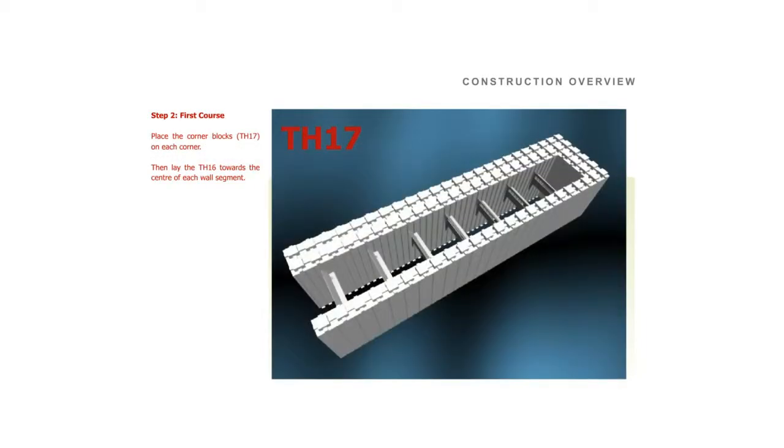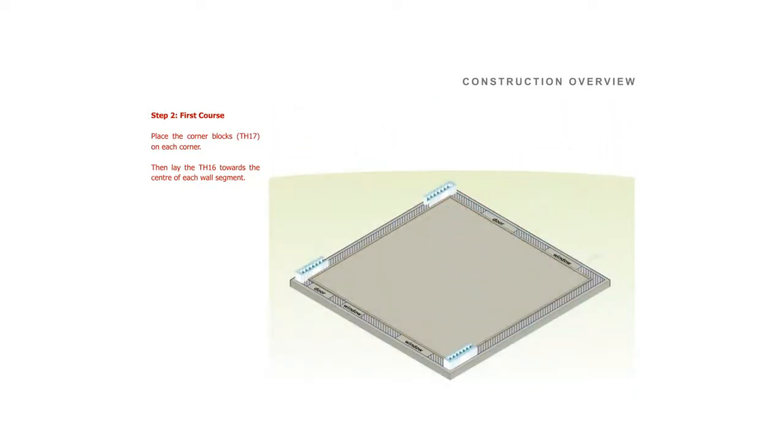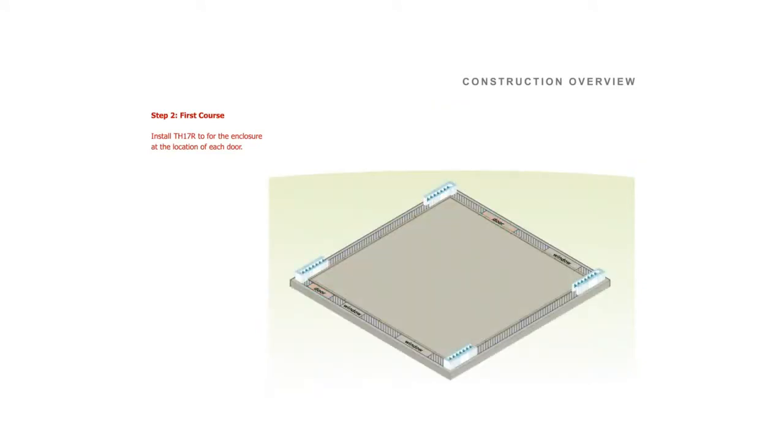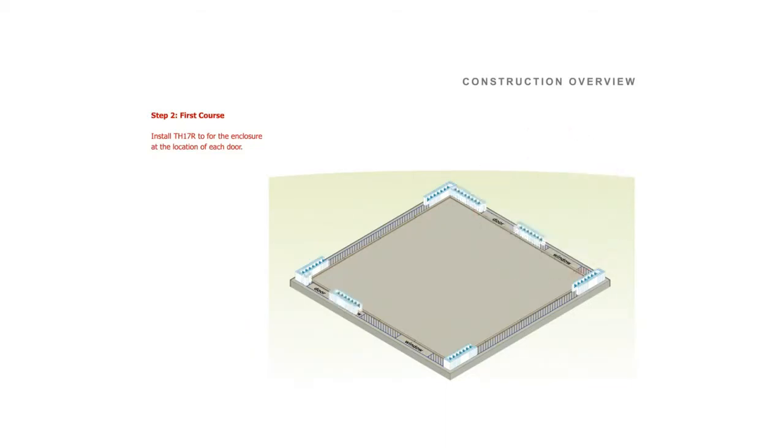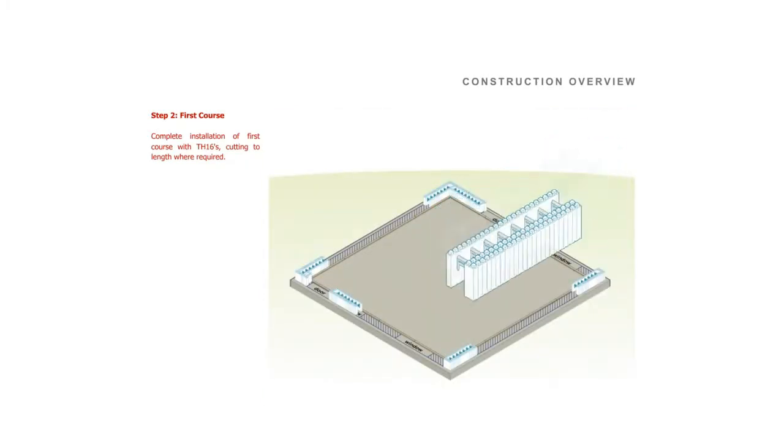Step 2. The first course. Place corner blocks, TH-17s, on each corner. Then lay the TH-16 towards the centre of each wall segment. Install a TH-17R for the enclosure at the location of each door. Complete installation of first course with TH-16s, cutting to length where required.